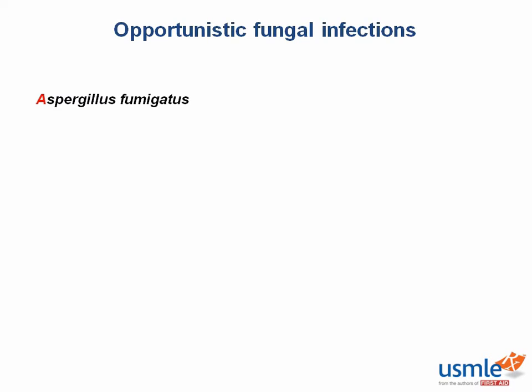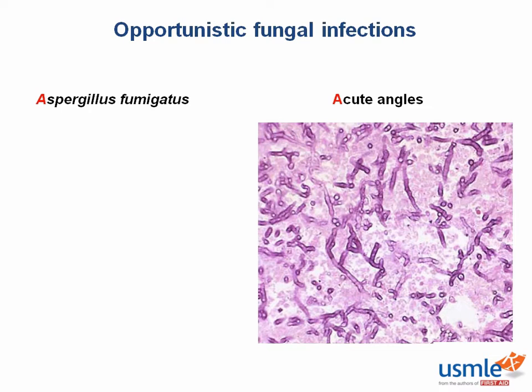Aspergillus fumigatus is a fungus that causes various lung diseases in immunocompromised hosts. You'll need to know what Aspergillus looks like because you'll often be shown a stain and asked to identify the fungus. Aspergillus is found in acutely branching angles, usually about 45 degrees. These fungal organisms are also septate — they have septate hyphae, with little lines dividing the organisms. These are the septa, which will be very important when we contrast Aspergillus to other invasive fungal organisms.